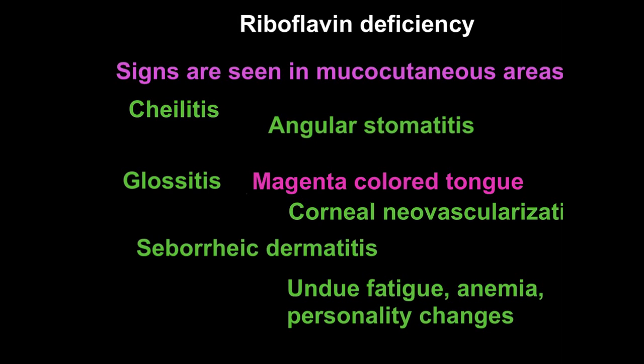Now let's look at riboflavin deficiency manifestations. Riboflavin deficiency usually results from dietary deficiency. Isolated riboflavin deficiency is generally rare, but it can be associated with other water-soluble vitamin deficiencies. The signs of riboflavin deficiency are predominantly located in mucocutaneous areas.